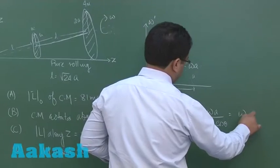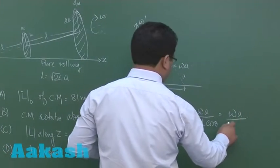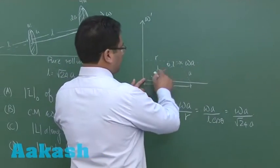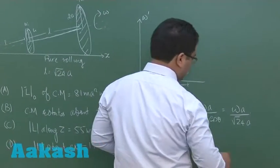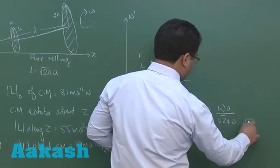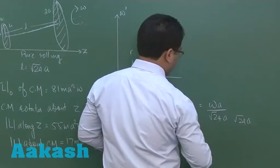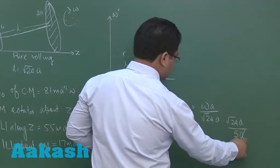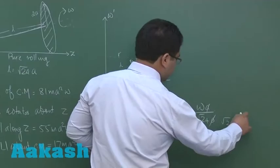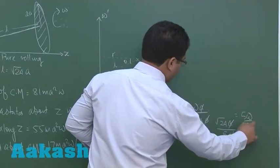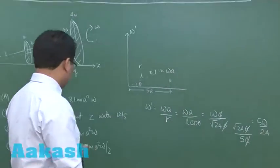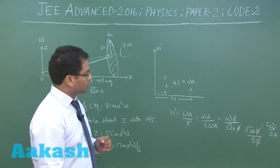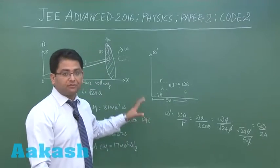Now let us write the value: L has been given as root 24A and cos theta here would be base by hypotenuse, so base is again root 24A and hypotenuse is 5A. So here this A would cancel with this and that comes out to be 5 omega by 24, while the option given is not matching. And similarly, if you proceed forward, none of the options is matching with our given solution.